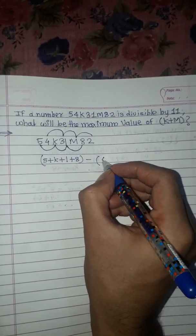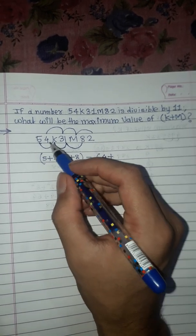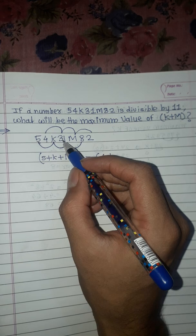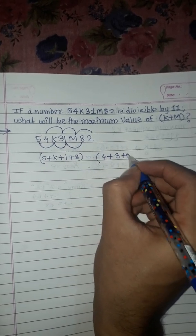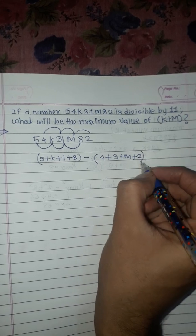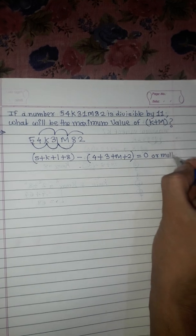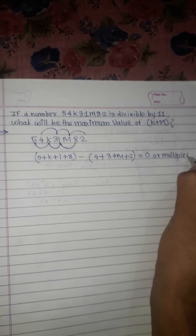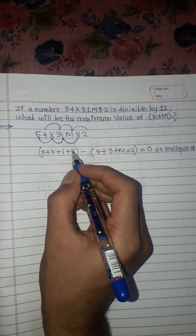So (5 + k + 1 + 8) - (4 + 3 + m + 2) = 0 or multiple of 11. Calculating: 8 + 1 = 9, plus 5 = 14 + k. And 4 + 3 = 7, plus 2 = 9 + m. Therefore (14 + k) - (9 + m) equals 0 or 11, 22, etc.